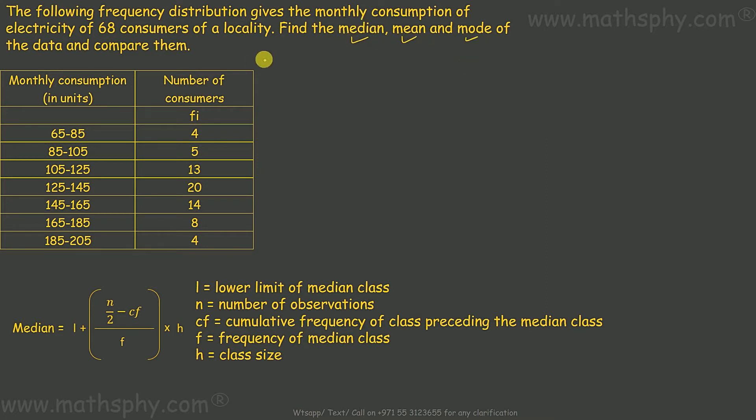Let's take up median first. We have this data here. We have been given range 65 to 85, 4 consumers; 85 to 105, 5 consumers. Likewise, we have entire data here. Now, this data is called grouped data because we have made groups. First group 65 to 85, second group 85 to 105.